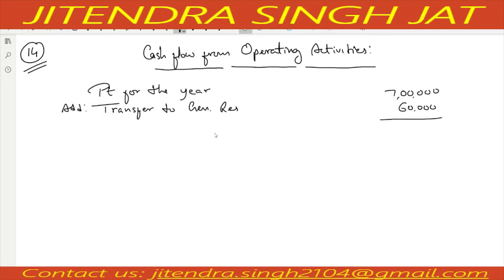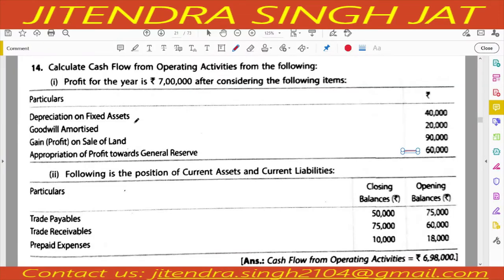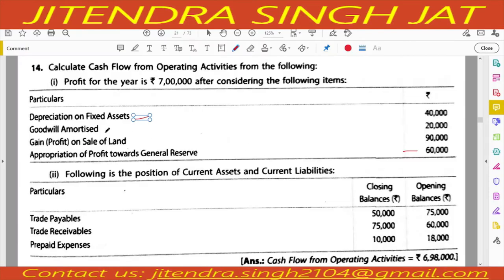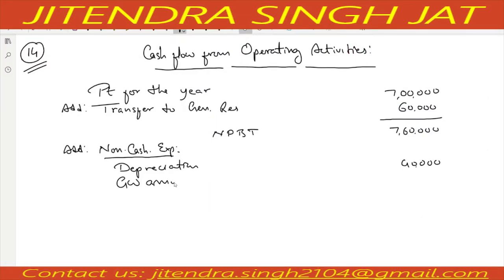When we add, what we get? Net profit before tax — extraordinary items are not given. So 7 lakhs plus 60,000 gives us 7,60,000 as net profit before tax. Then we add non-cash expenses. Depreciation of 40,000 is given — this is a non-cash expense. Goodwill amortized is also given at 20,000.